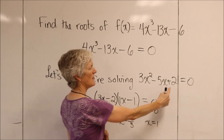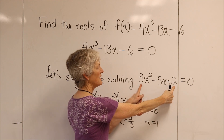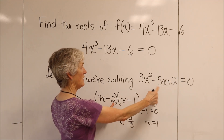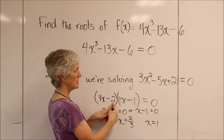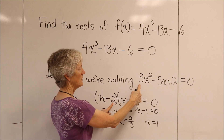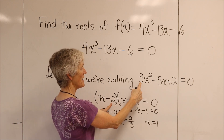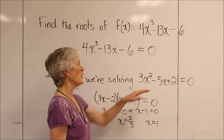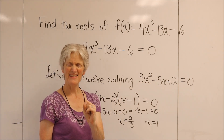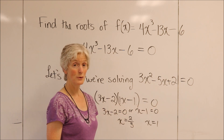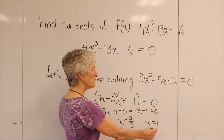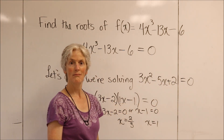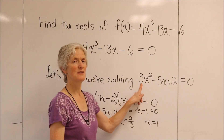I have 3x minus 2 equals 0 or x minus 1 equals 0, giving me my two solutions. Both solutions are factors of the last term divided by factors of the first term. My solution of 1 is a factor of 2 divided by a factor of 3. My solution of 2/3 is a factor of 2 divided by a factor of 3. So if your roots are rational, they have to be factors of your last term divided by factors of your first term — really the coefficient of the first term.